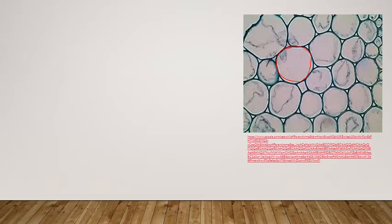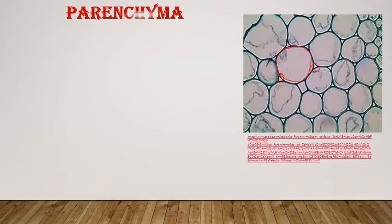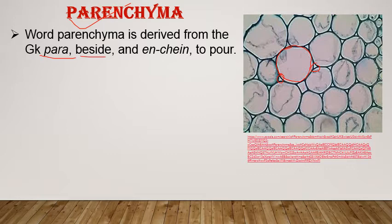We will discuss parenchyma first. This is the original picture taken under microscope. These cells are polygonal, thin-walled or thick-walled, having intercellular spaces, with living cells and protoplasm present. The name parenchyma is derived from a Greek word: 'para' means beside and 'enchyma' means to pour.